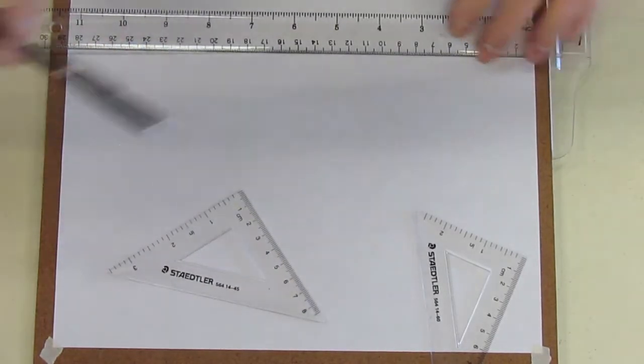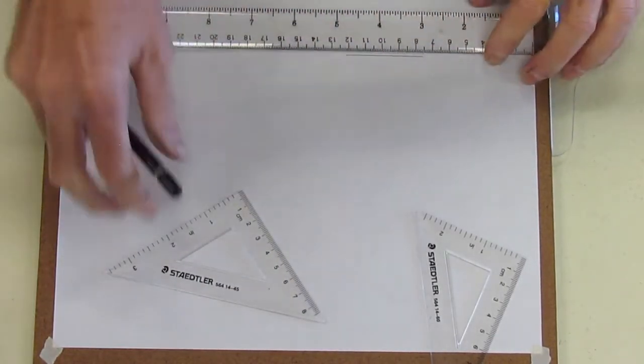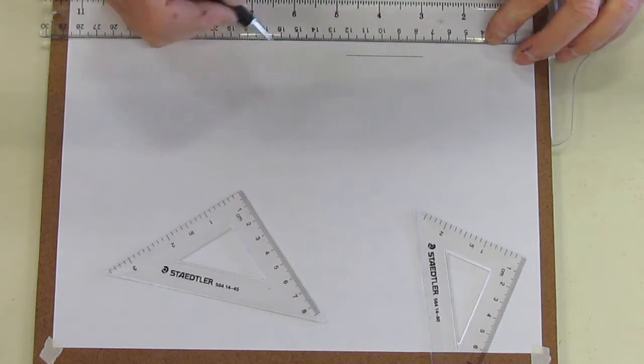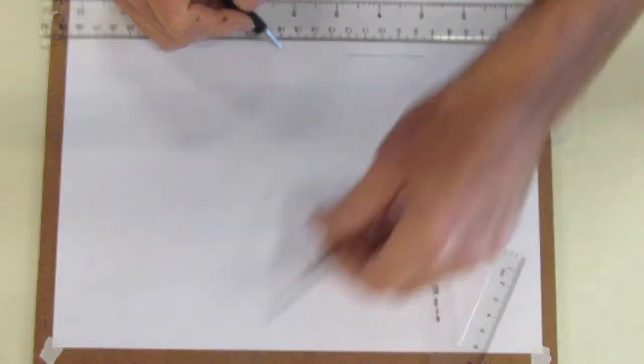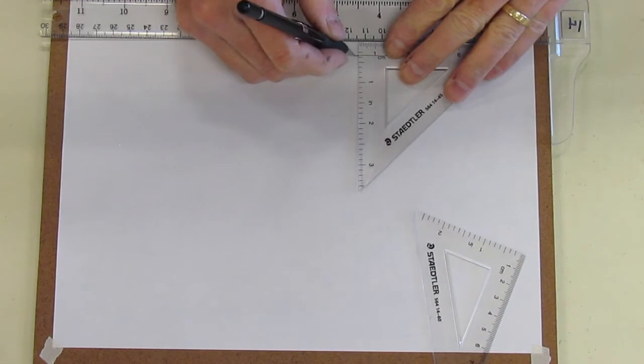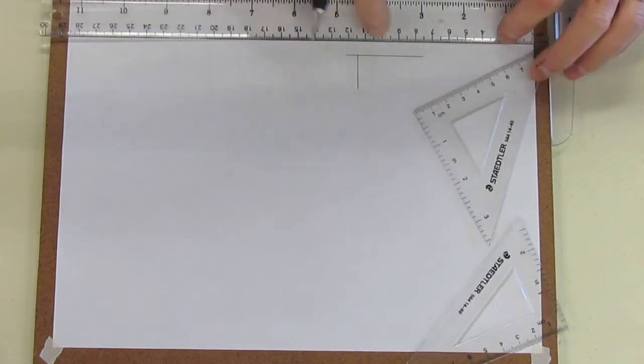So what does perpendicular mean? Well, if I had a horizontal line and I wanted to go through a specific point, I could take a triangle, sit it on top of my t-square, and draw a line perpendicular, 90 degrees. So I've created a perpendicular line.